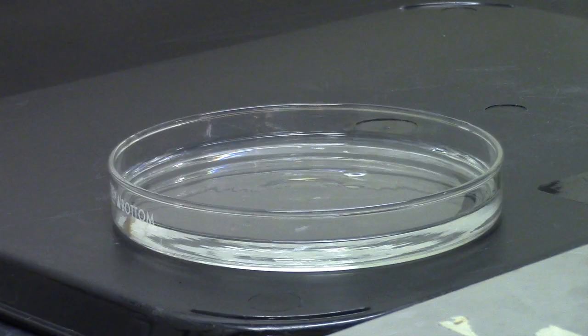Formation of a monolayer. Fill the petri dish about halfway with water. You may use distilled water or tap water. In fact, if it is cold in the lab, use hot water so that the cyclohexane will evaporate faster. We used hot water in this demonstration.